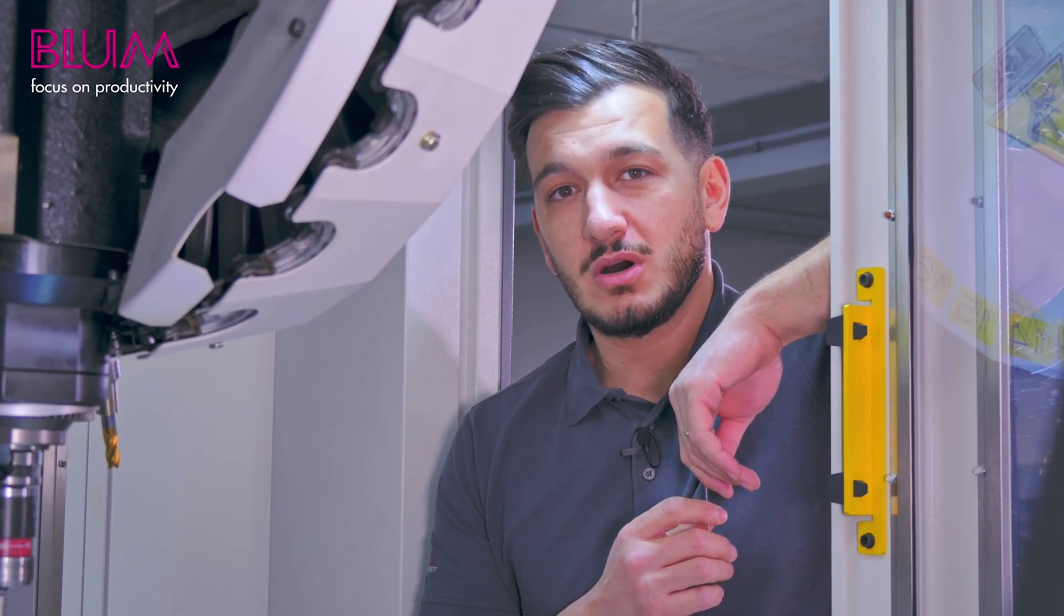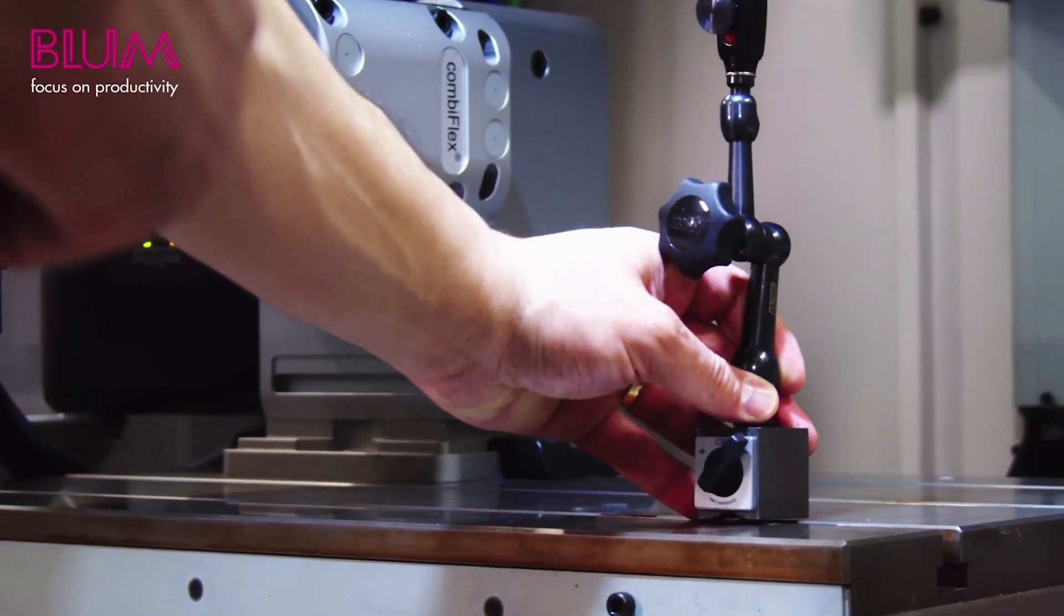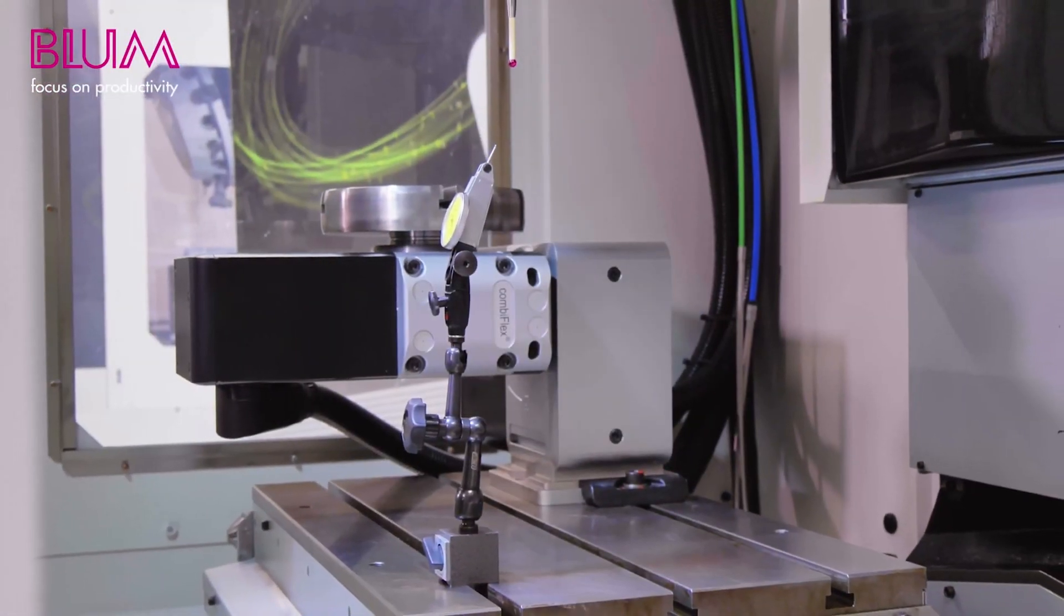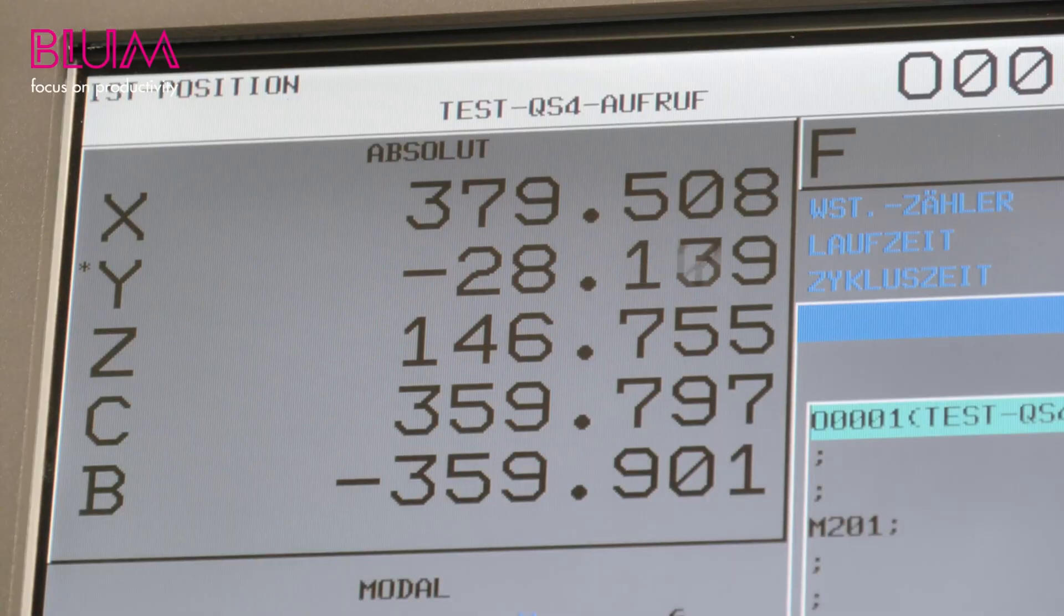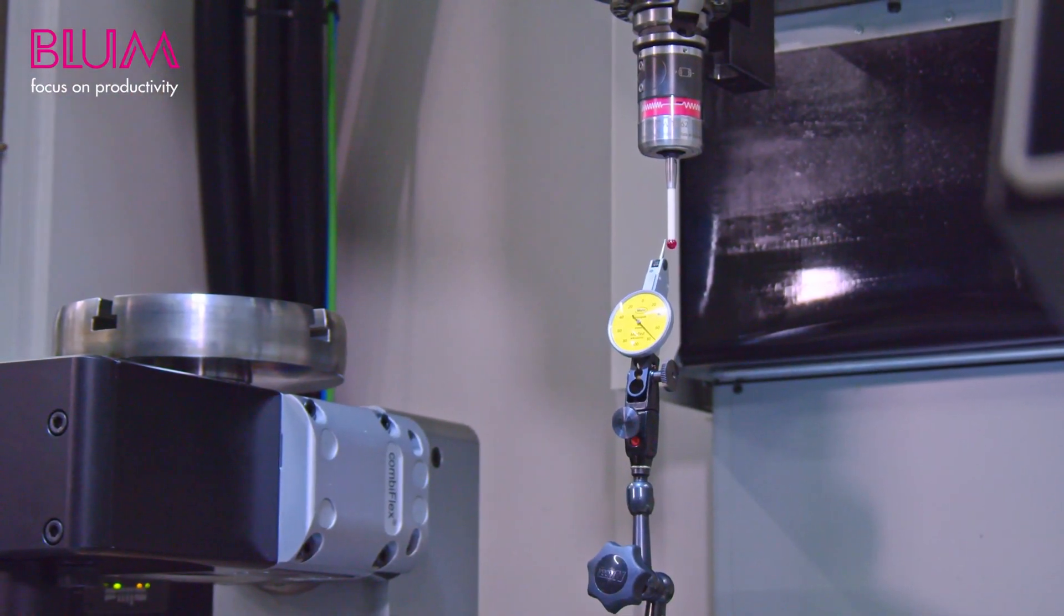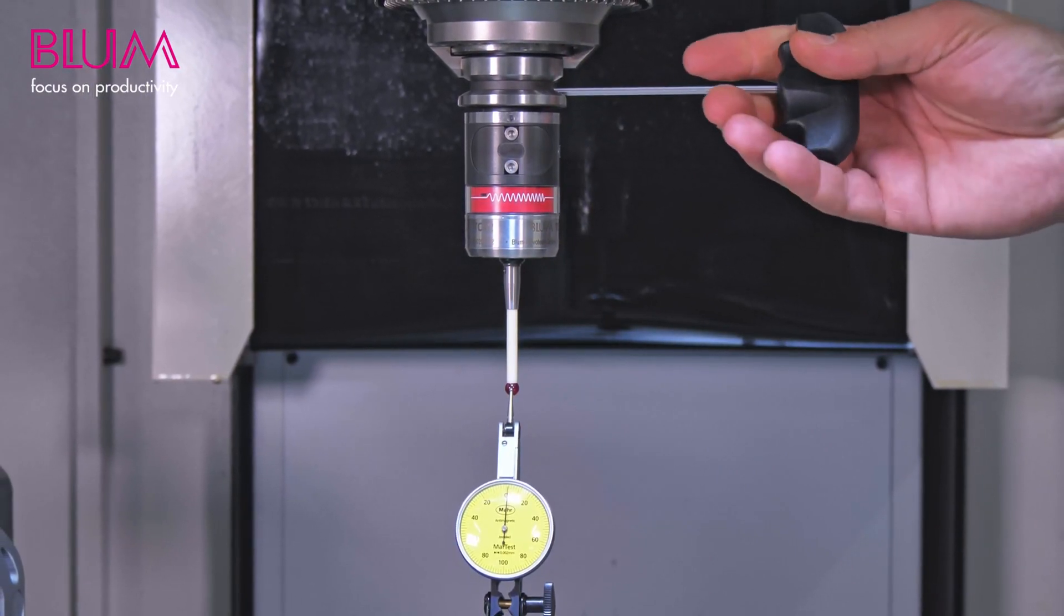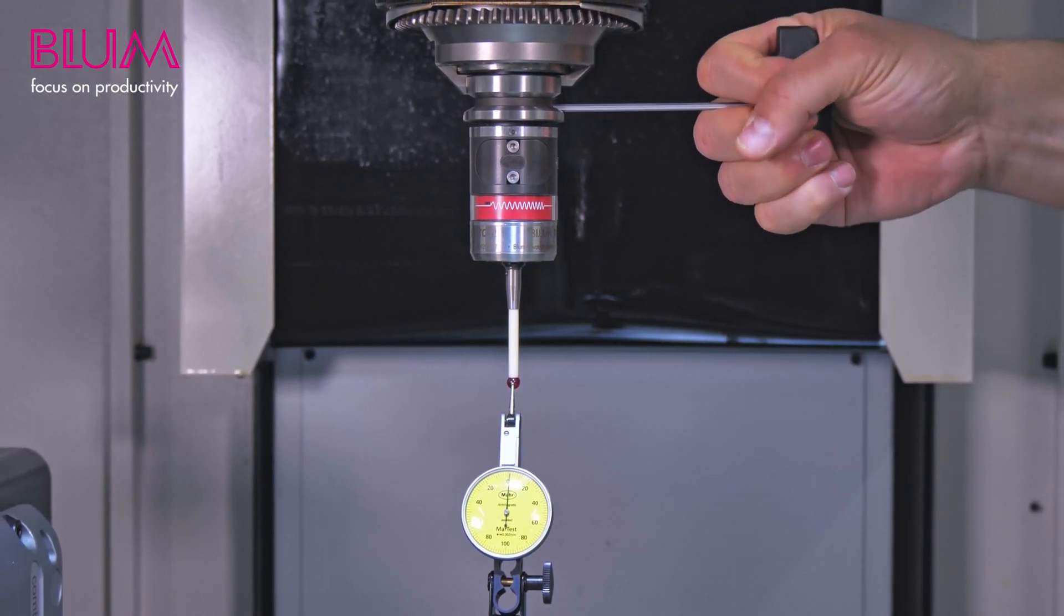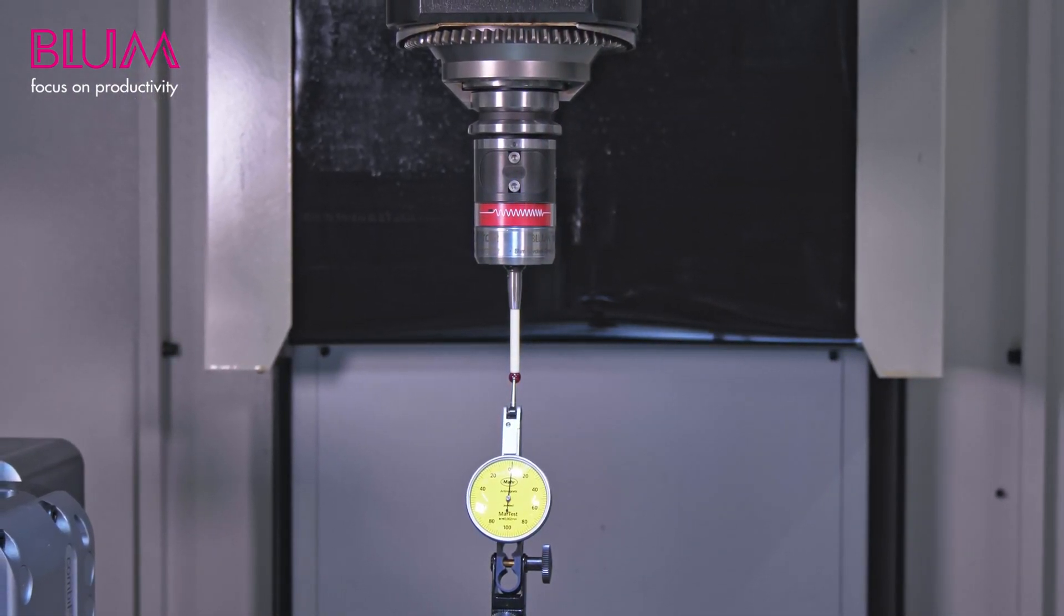What you need for this is a lever gauge or a dial gauge, depending on what you have available. Before we can start with the alignment process, it's essential to first loosen and then carefully retighten the tension screw, which is positioned at the very top of the tool holder where our probe is located. This really enables us to align everything properly afterwards.